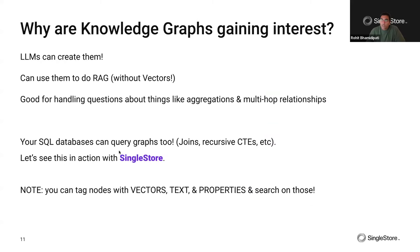Why are knowledge graphs gaining interest? First, LLMs can create knowledge graphs — this is fundamentally what an LLM is built to do. It understands text, figures out the important entities and their semantic meaning, and understands relationships between entities. For example, it understands the relationship between dogs and huskies. So you can use an LLM to build a knowledge graph, and today I'll show a simplistic example of building one from an LLM.